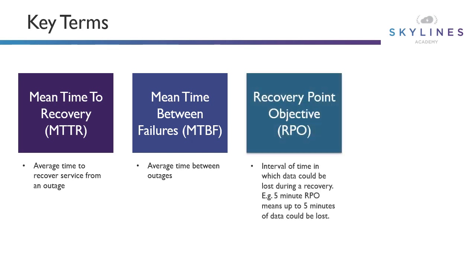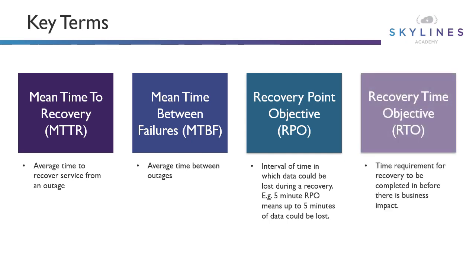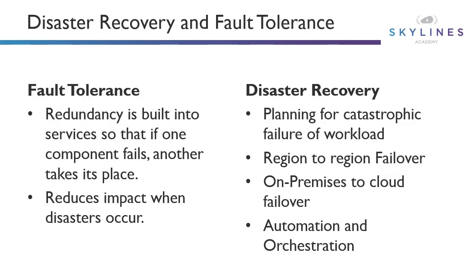The more common ones are recovery point objective and recovery time objective. The recovery point objective is the interval of time in which data could be lost during the recovery. For example, a five-minute RPO means up to five minutes of data could have been lost when we recover that service. Recovery time objective, in contrast, is the time it's going to take to actually recover that service and get it back online. The business might say, if it goes out, I need it back online within 10 minutes — that's my RTO — and I don't want to lose any more than a minute of data. So we have to be backing up and making sure data is continuously replicated somewhere else so we can recover it quickly.